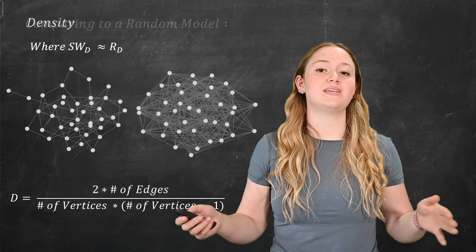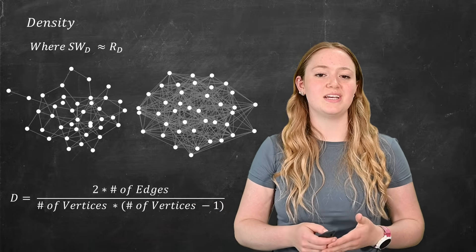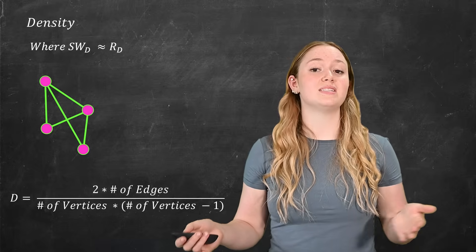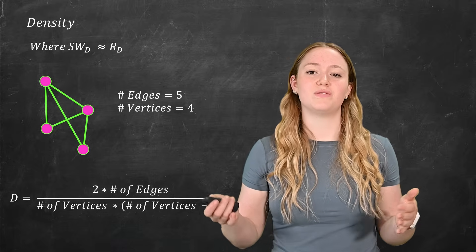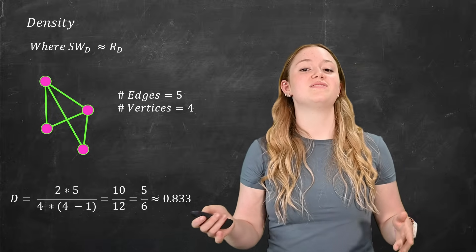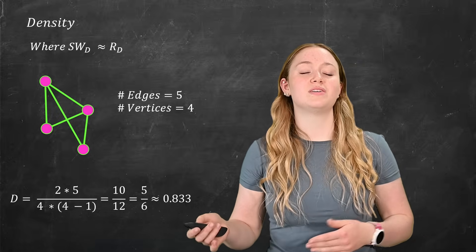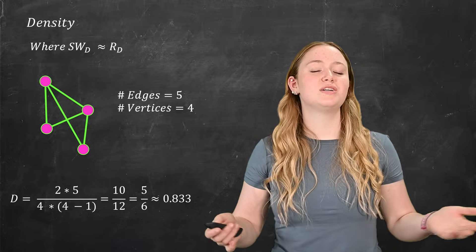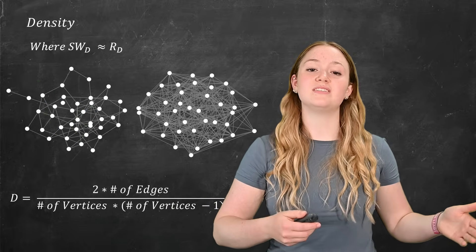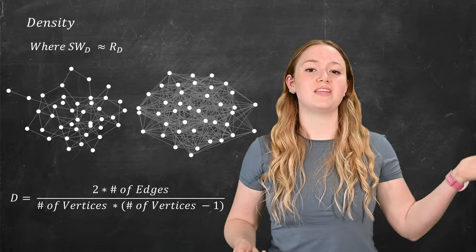So if you're still wondering what density is, we can look at these two graphs as an example. We can clearly see which one is denser here. We can also do an example to clarify this further. Here, in this small graph, we've got five edges and four vertices. So we can calculate this pretty easily. We've got 2 times 5 divided by 4 times 3. So 10 divided by 12, which is just 0.833. So density is really just a measure of how many edges are between all of the vertices in a graph. The more edges, the higher the density.